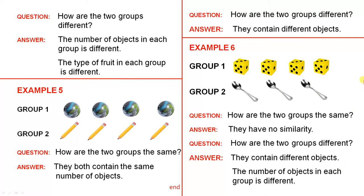Those are just 6 examples that you can present to the students, or you can present any other examples whatsoever. As long as you help the students to recognise that when they have two groups before them, they are able to pick the things that are the same in the two groups, and the things that are different.